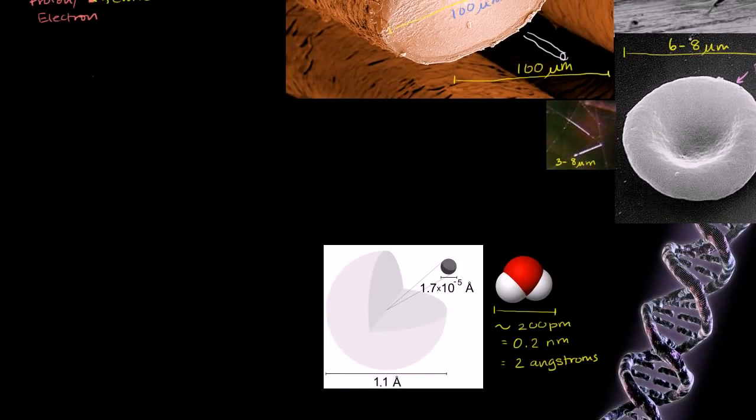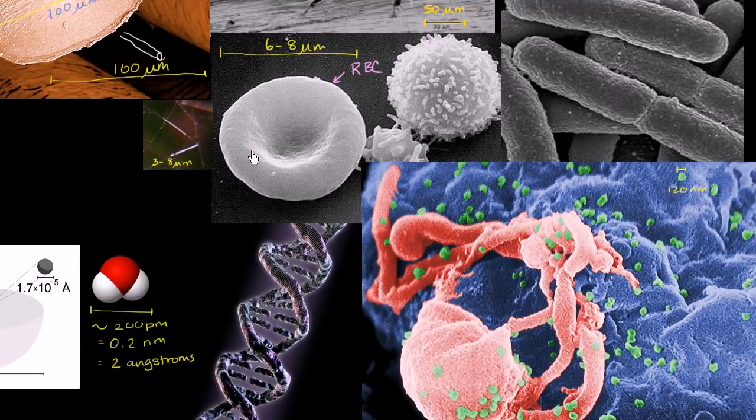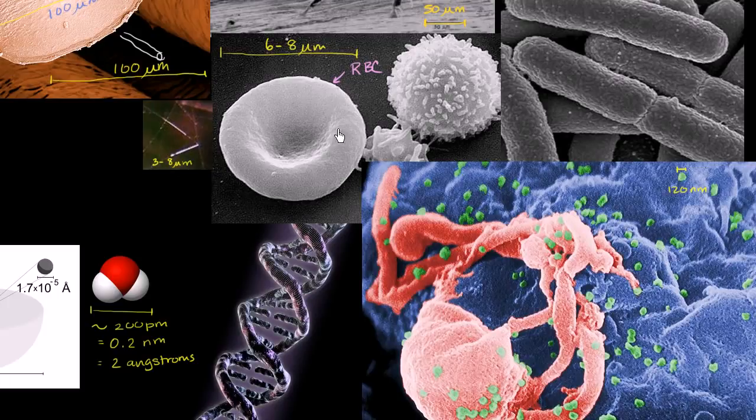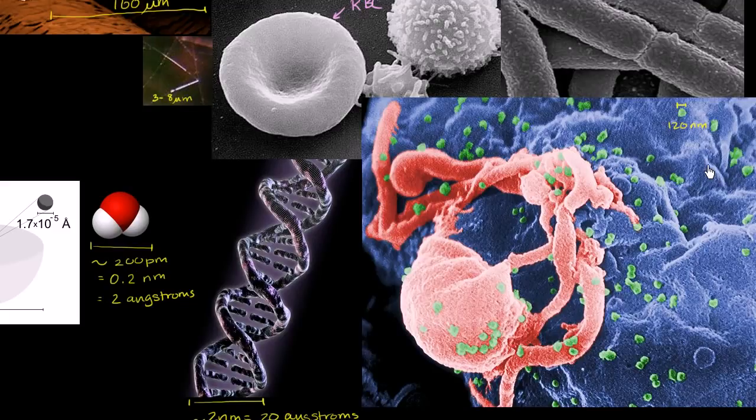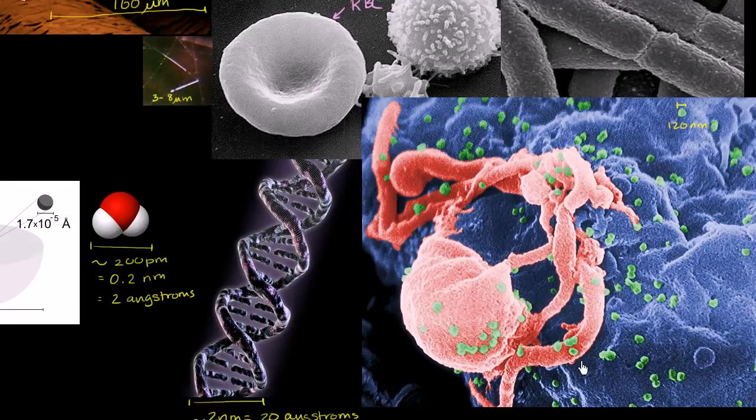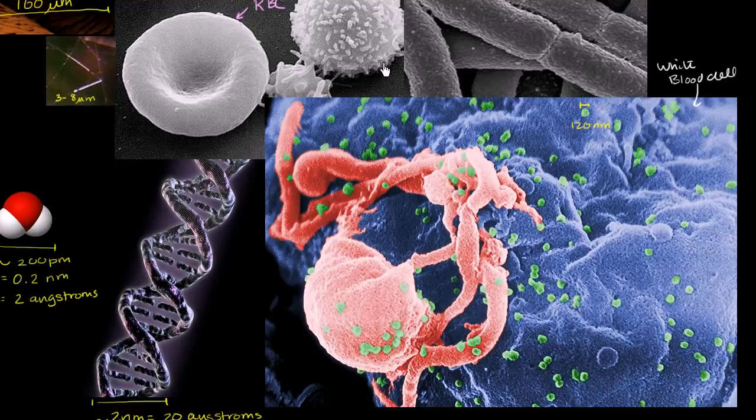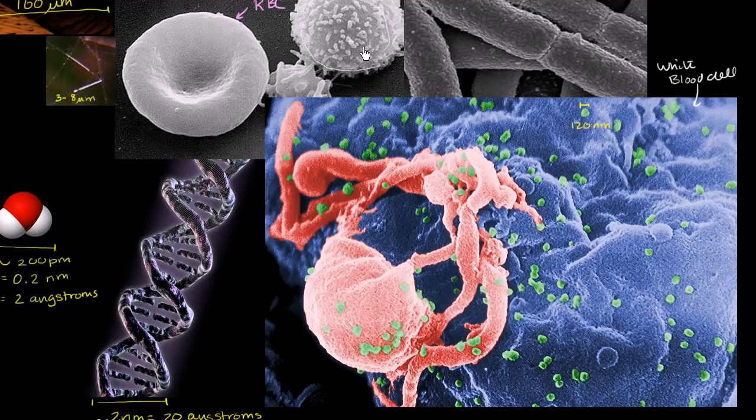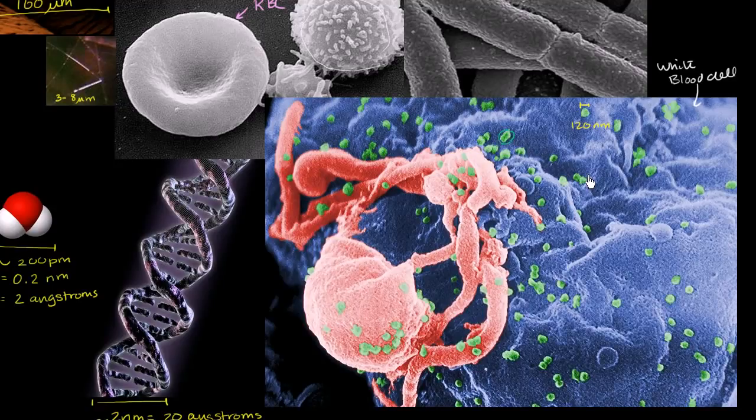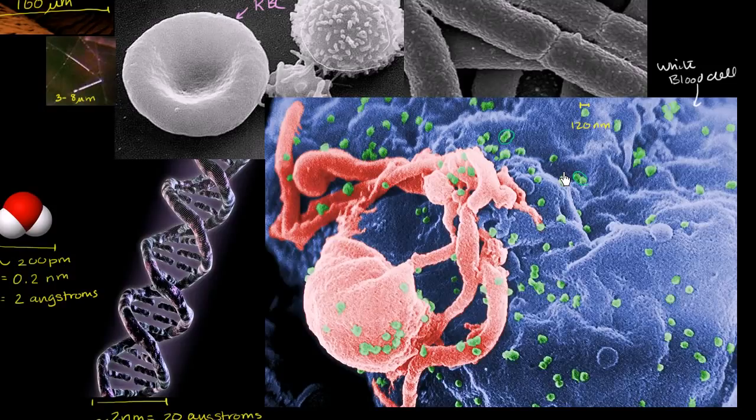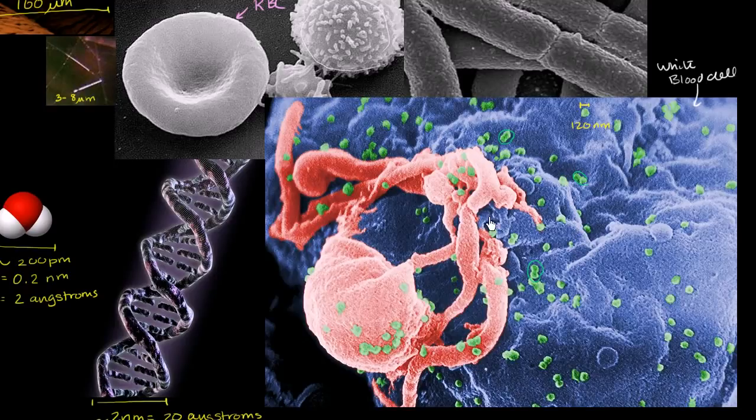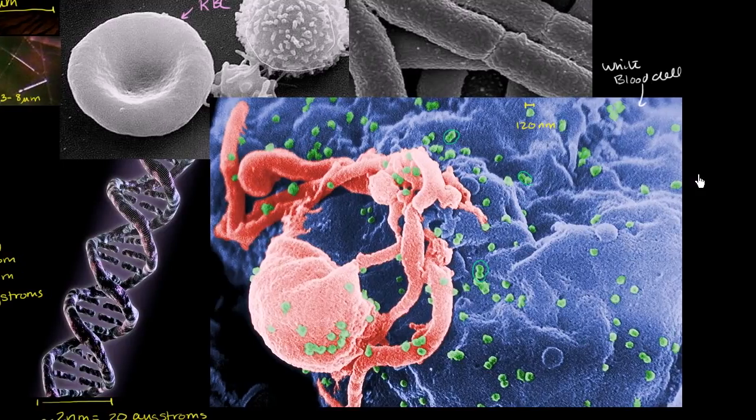Now things are going to get really crazy. We're going to start getting into the hundreds of nanometer range. Remember, a nanometer is a thousandth of a micrometer. This big enormous planet or asteroid looking thing, this is a white blood cell. But what's really fascinating about this picture are these little green things that are emerging after essentially reproducing, emerging from the surface of this white blood cell. And these things right here, these are AIDS viruses.